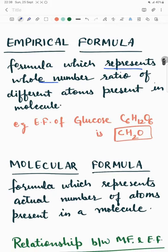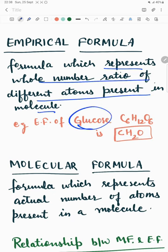Empirical formula represents whole number ratio of different atoms present in a molecule. For example, glucose, the formula is C6H12O6.